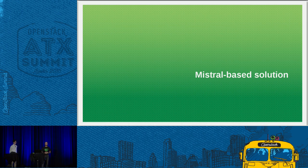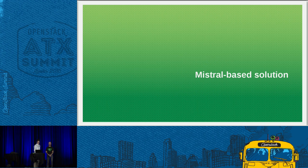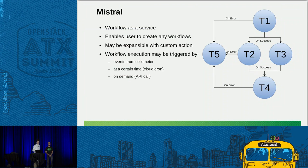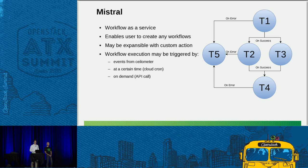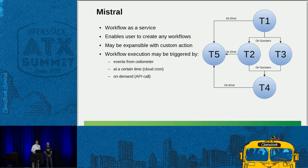I'm going to hand over to David to talk about the Mistral-based solution he's been working on. Mistral is a workflow-as-a-service for OpenStack. It enables users to create workflows — a logical graph of tasks — and for each task you can define what to do on success or error. If the built-in tasks aren't enough, you can write your own actions as Python classes, so you can do anything inside them. Workflow execution can be triggered by events from Ceilometer, used as a type of cloud cron to run workflows on a given time, or triggered via an API call on demand — which is used in this solution.